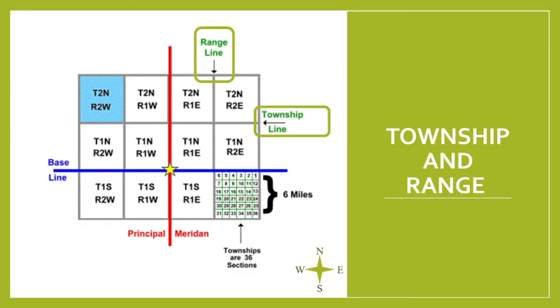In the PLSS, townships are described relative to a reference point. So, for the example shown here in bright blue, the township is situated two townships north of the baseline, noted as T2N, meaning township 2 north, and two townships west of the principal meridian, noted as R2W, meaning range 2 west.